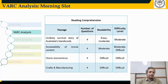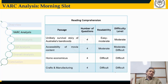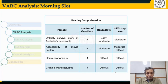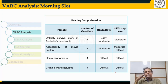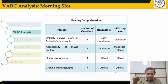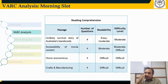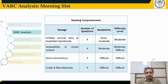The four RC passages were from fairly diverse areas: one about Australia's marsupials, another about content in movies, another about economics, and another about crafts and manufacturing. In terms of readability, the first passage — about marsupials and bandicoots in Australia — was fairly easy to read and the questions were not too tough. This is the one passage students should not have missed.